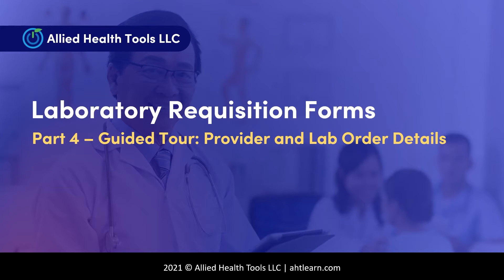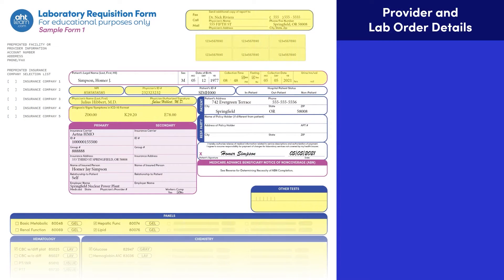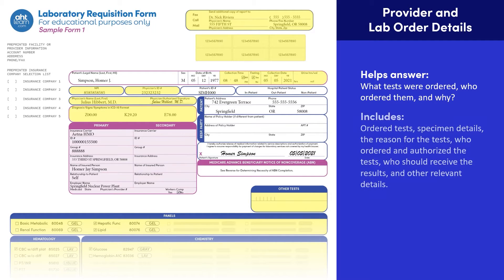Now that you understand the insurance and responsible party category, let's explore our final category: the provider and lab order details category. The information in this category helps us answer what tests were ordered, who ordered them, and why. This category includes the ordered tests, specimen details, the reason for the test, who ordered and authorized the test, who should receive the results, and other relevant details.